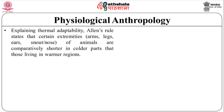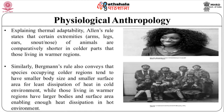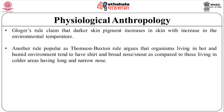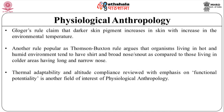Bergmann's rule conveys that species occupying colder regions tend to have smaller body size and smaller surface area for least dissipation of heat, while those living in warmer regions have larger bodies and surface areas enabling enough heat dissipation. Gloger's rule claims that darker skin pigmentation increases with increase in environmental temperature. The Thomson-Buxton rule argues that organisms living in hot and humid environments tend to have short and broad noses, as compared to those in colder areas having long and narrow noses. Thermal adaptability and altitude compliance reviewed with emphasis on functional potentiality is another field of interest of physiological anthropology.